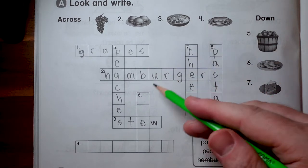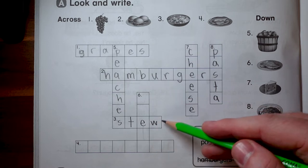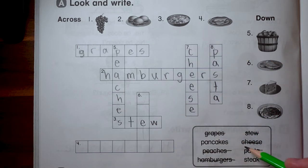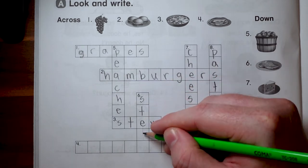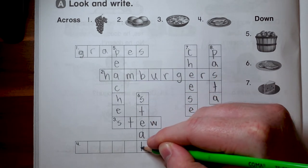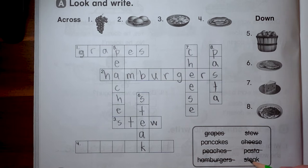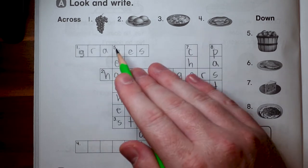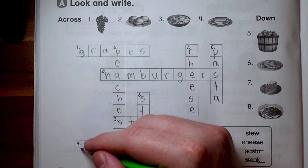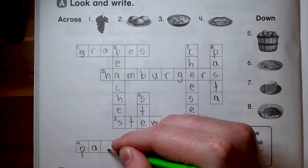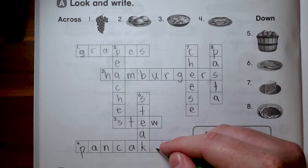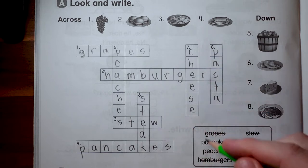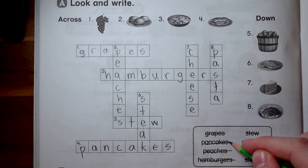Only two left. Now number six down is steak. Here's steak. S-T-E-A-K. Steak. One left. Pancakes. That means number four. Yep. Pancakes. P-A-N-C-A-K-E-S. Pancakes. Part A is done.